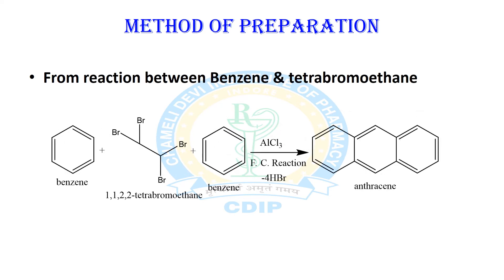The next reaction is from the reaction between benzene and 1,1,2,2-tetrabromoethane. Again the same kind of reaction occurs — benzene is treated with 1,1,2,2-tetrabromoethane in the presence of AlCl3, which is a Lewis acid. The Friedel-Crafts acylation reaction occurs and anthracene is produced.